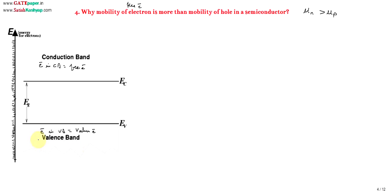Now, hole means vacancy in the valence band — vacancy means empty energy level. If an electron moves from the valence band to the conduction band, the energy level it previously occupied becomes vacant. That empty energy level in the valence band is called a hole. A filled energy level in the valence band is a valence electron; a filled energy level in the conduction band is a free electron.